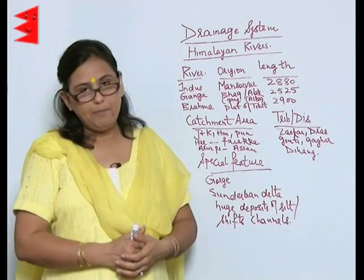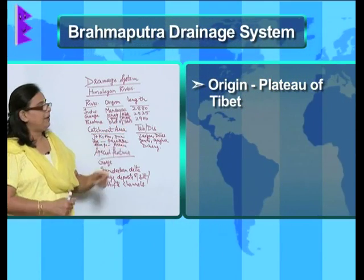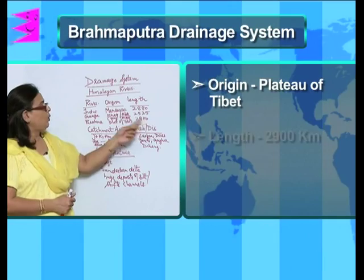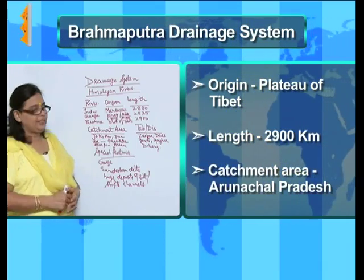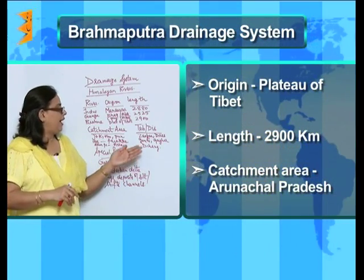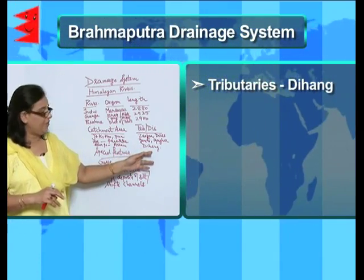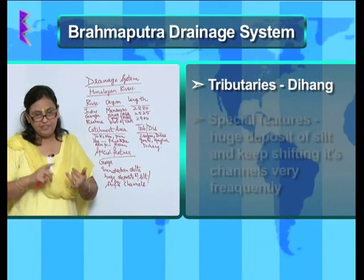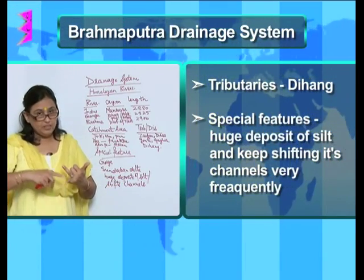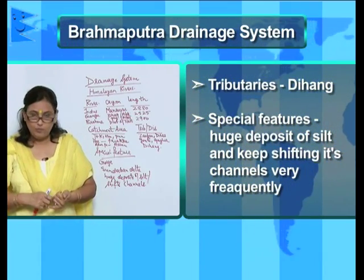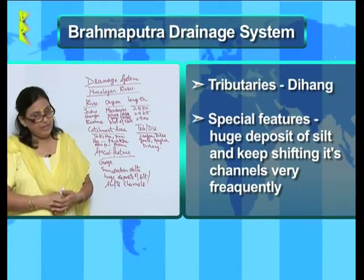The third Himalayan river is the Brahmaputra. The Brahmaputra river originates at the plateau of Tibet and the total length is 2900 kilometers. Its catchment area covers Arunachal Pradesh and Assam, and it generally flows outside the country as well. Dihang is the most important tributary, and the most important feature is that it has huge deposits of silt, making the land very fertile wherever it flows, and it keeps shifting its channel very frequently.